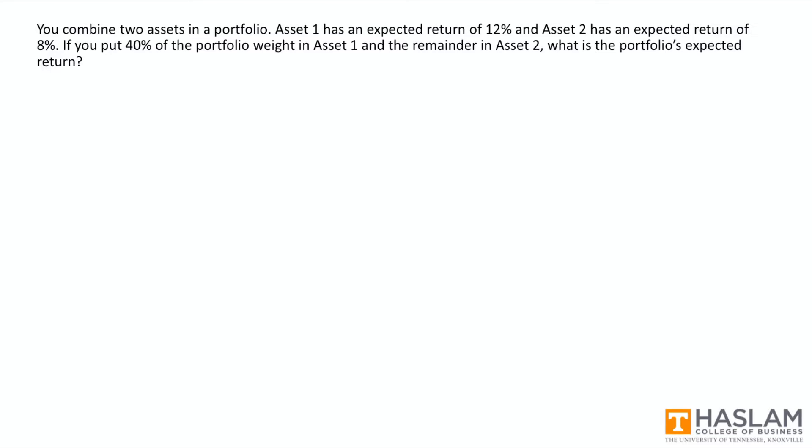The calculation is really straightforward for a portfolio return. So I'll illustrate quickly with an example. You combine two assets in a portfolio. Asset one with its expected return of 12% and asset two with its expected return of 8%. You're going to put 40% of the portfolio weight in asset one, so that's W1. The remainder, so W2 is equal to 1 minus W1, which is equal to 0.6. You're asked to calculate the portfolio's expected return. We can solve the problem by just inserting the appropriate numbers into the portfolio expected return formula. So for the weights, we're going to have 0.4 and 0.6, and for the two expected returns, we'll have 0.12 and 0.08. And this turns out to be 0.096 or 9.6%.